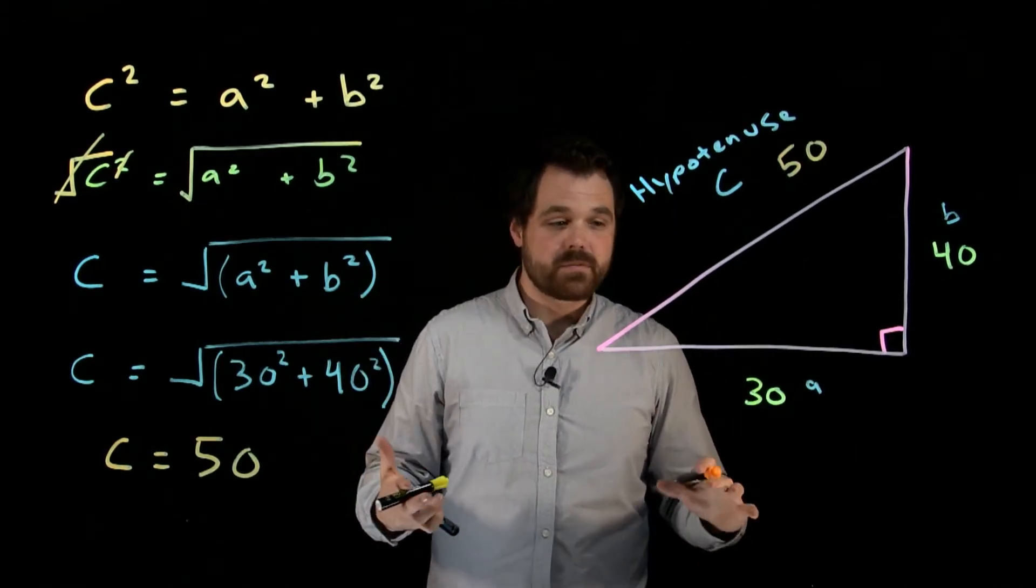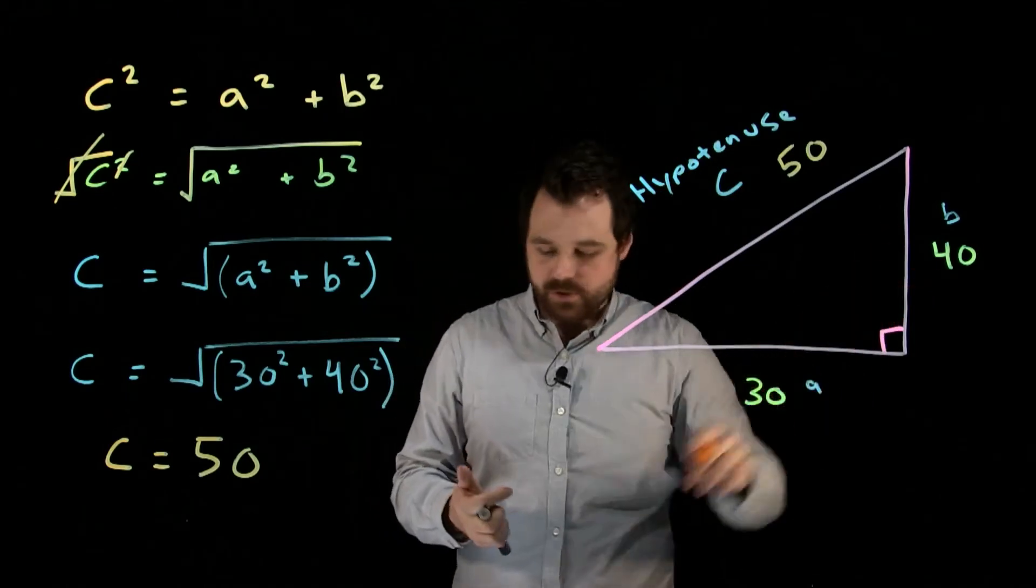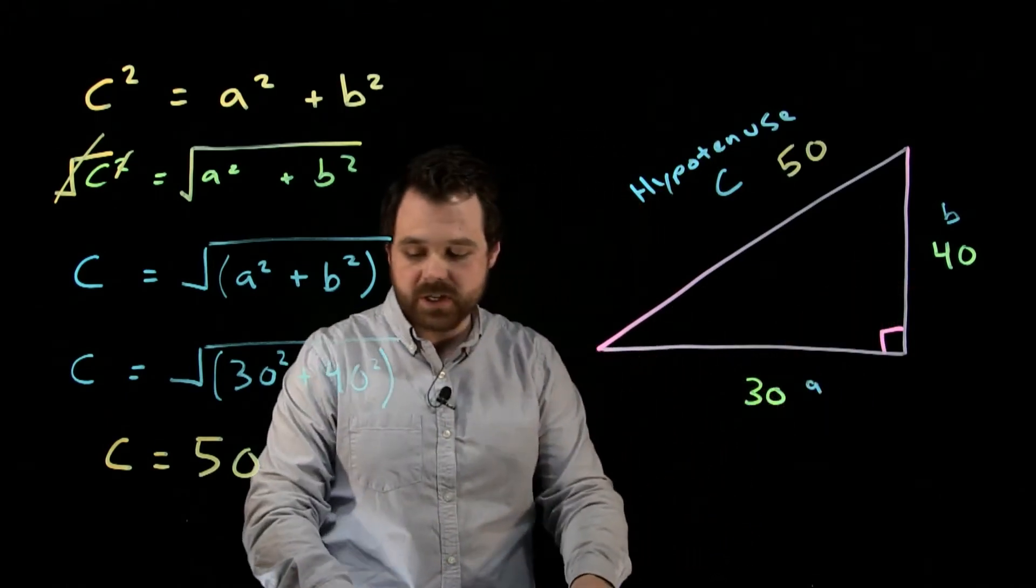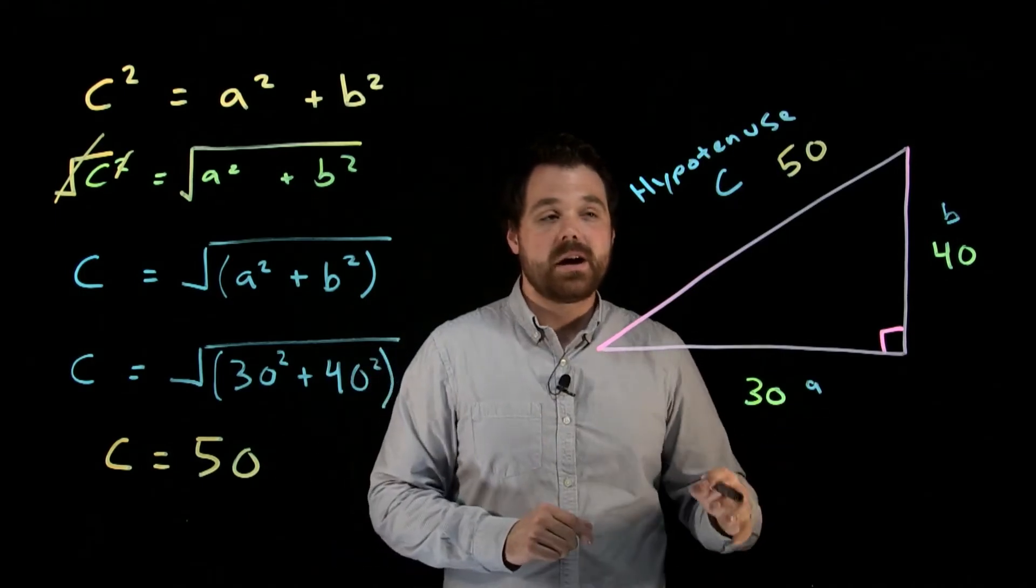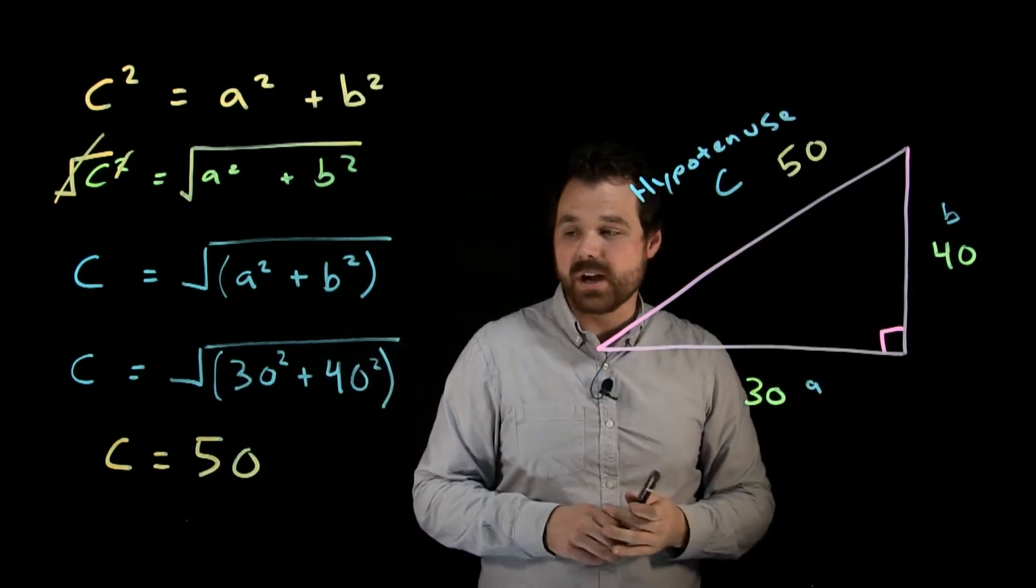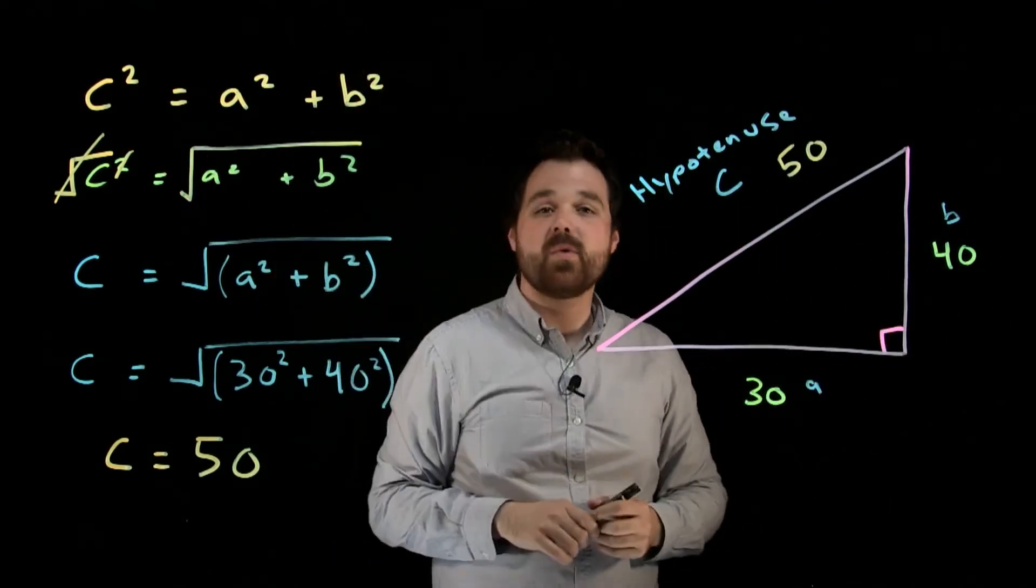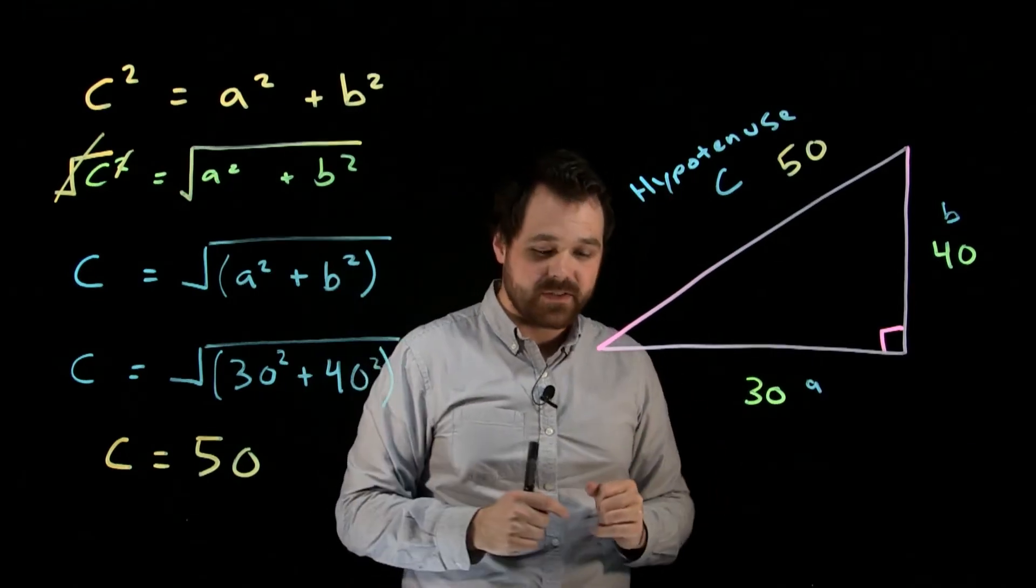That's how you would use Pythagorean's theorem to solve for the hypotenuse if you have the other two sides. Now, if we were dealing with a situation where we had the hypotenuse and one of the two sides, we would simply take this same formula and transpose it a little bit differently.